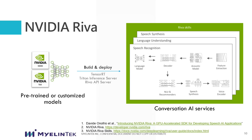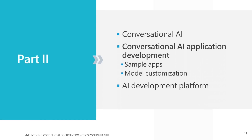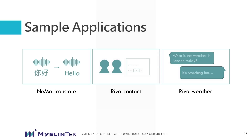The conversational AI service by Riva can be accessed by standard gRPC clients. Next, we will talk about application development for conversational AI, starting with three sample applications. The first is NeMo Translate, which generates speech audio in translation. Riva Contact is a video conferencing app that transcribes speech and highlights special information. Riva Weather listens to weather queries and reports the current weather in major cities around the world.